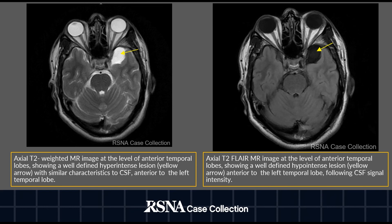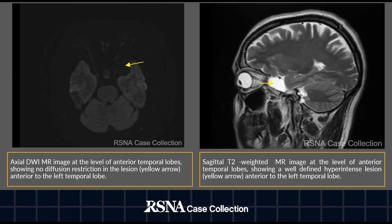These are the MRI images. This is an axial T2-weighted image at the level of the anterior temporal lobes showing a well-defined hyperintense lesion, as depicted by the arrow, following the same signal characteristics as CSF. This is the FLAIR image, and at the same section the CSF signal is suppressed — the lesion also shows suppression of the signal. This is the axial DWI MR image at the same level, and the lesion is showing no restricted diffusion.